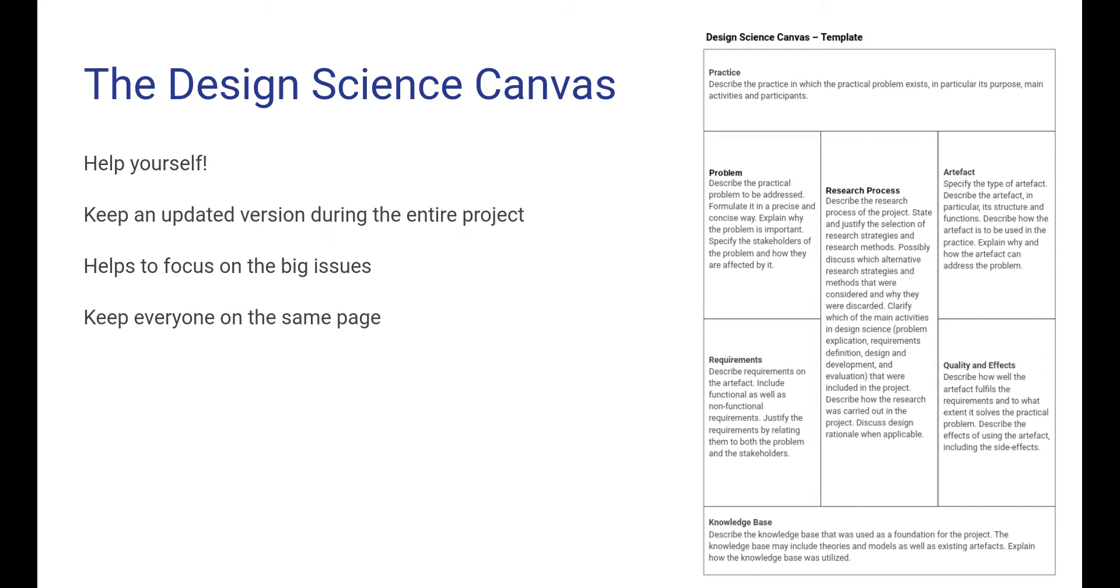But again, the design science canvas can also help yourself, in particular if you are in a project. Because the canvas can then be used to keep an updated version of everything that happens in the project, or rather the important things that happen in the project. In a big project, there are always lots of things, small ones and big ones, and you easily get overwhelmed to keep track of all this. The canvas will help you to pinpoint the important stuff, the big issues. And thereby, it can keep everyone in the project on the same page.